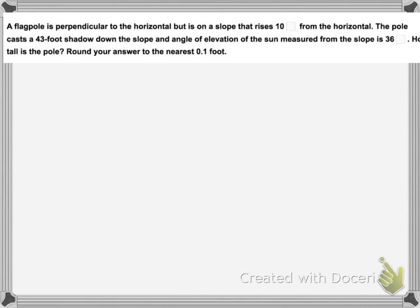A flagpole is perpendicular to the horizontal but is on a slope that rises 10 degrees from the horizontal. The pole casts a 43-foot shadow down the slope, and the angle of elevation of the Sun measured from the slope is 36 degrees. We want to know how tall the pole is.